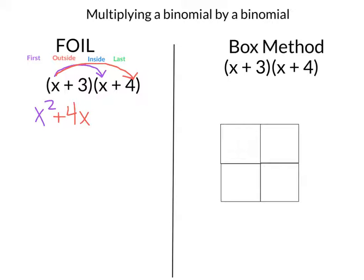Then we go to the I, which stands for Inside. They want me to multiply the two values together that are on the inside of my problem. In that case, I'm going to take 3 times X — that's a positive 3X, so I'm going to put plus 3X. And then for Last, they want us to look at each set of parentheses and take the value that's last in each set. So in that case, I've got 3 times 4, which is a positive 12, so I do plus 12.